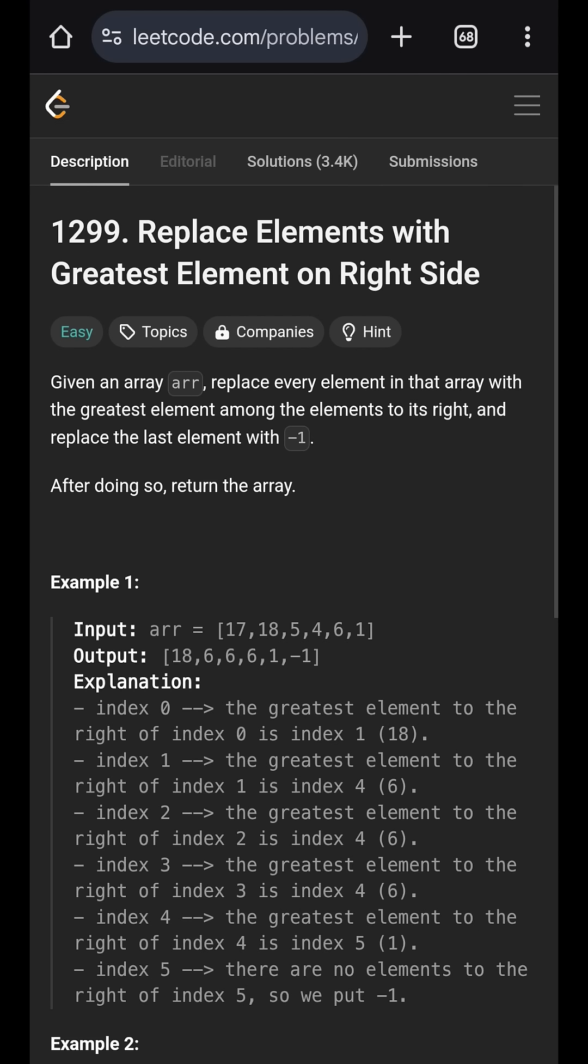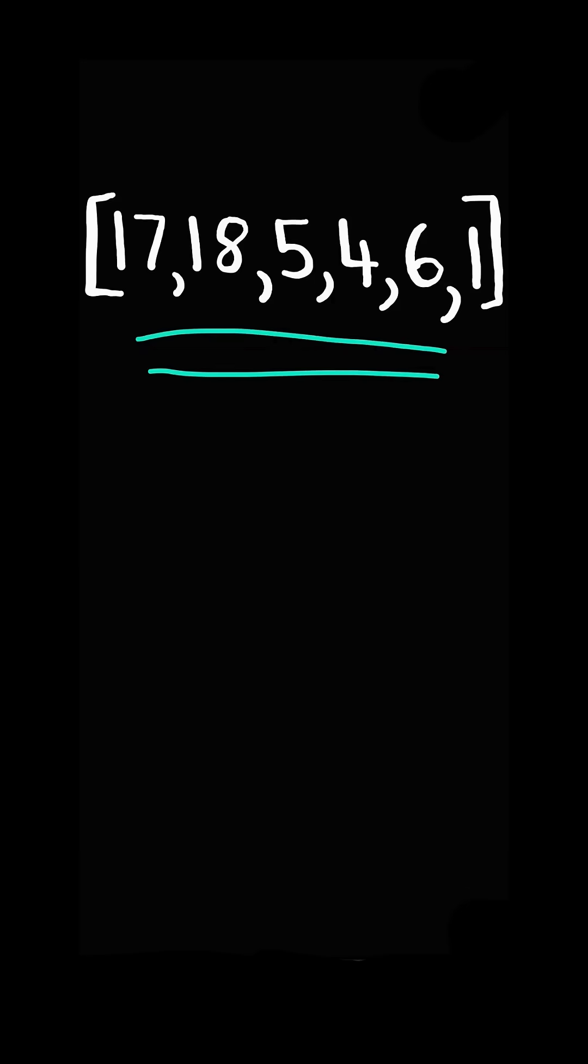Replace element with greatest element on right side. Given an integer array nums, replace every element in the array with the greatest element to the right.